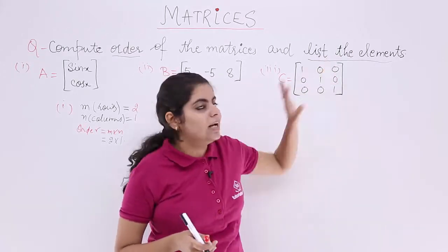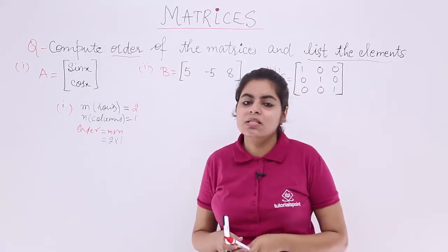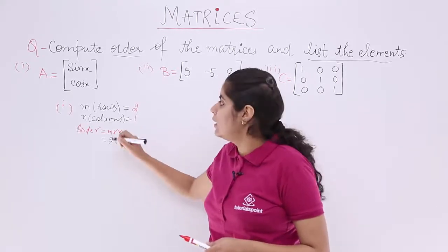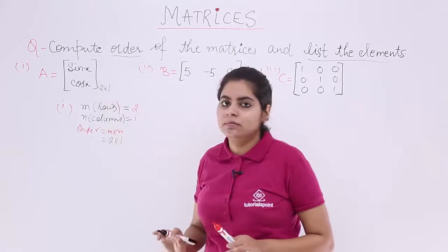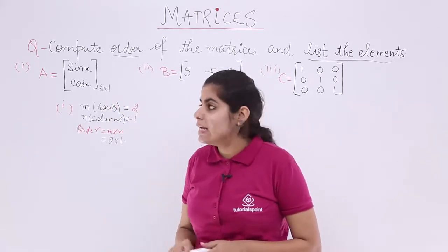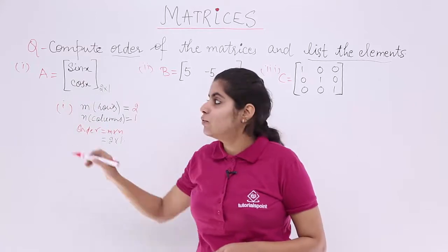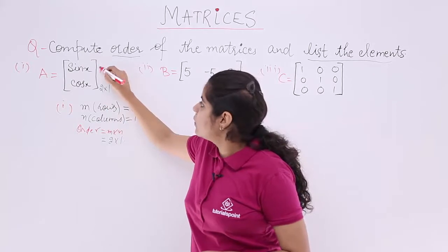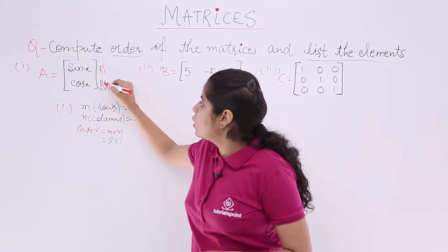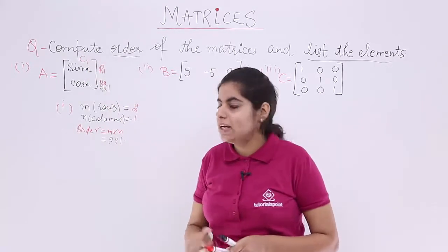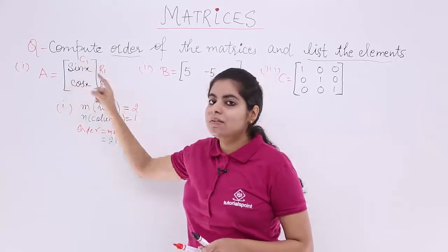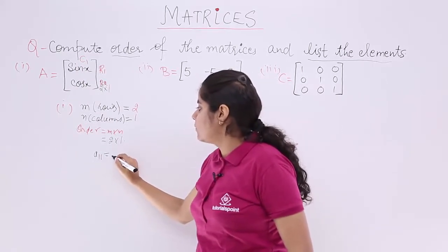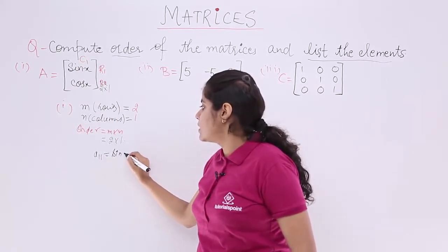The second task was to list the elements. Listing the elements means A11, A12 and so on. The order is 2 by 1. Now sin x is the first row, first column element. This is R1, this is R2, and this is only C1. So it is the intersection of R1 and C1. So A11 is sin x.